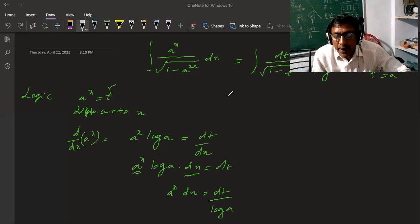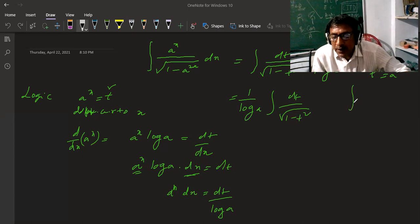So 1 by log of A as it is. Integration dt by root over 1 minus t squared. But I know one formula: integration 1 by root over 1 minus x squared dx is equals to sine inverse x plus constant.